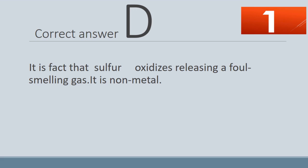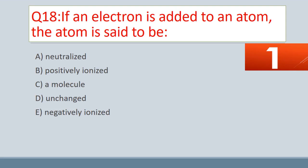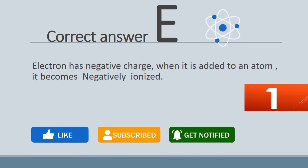Question No. 18. If an electron is added to an atom, the atom is said to be: A. Neutralized. B. Positively ionized. C. A molecule. D. Unchanged. E. Negatively ionized. The correct answer is E. An electron has a negative charge. When it is added to an atom, the atom becomes negatively ionized.